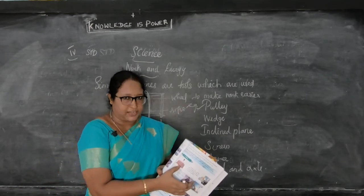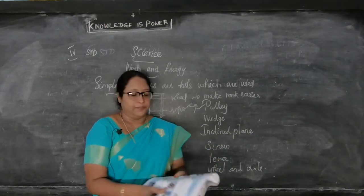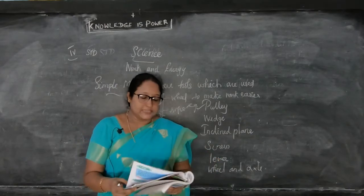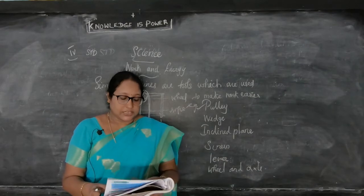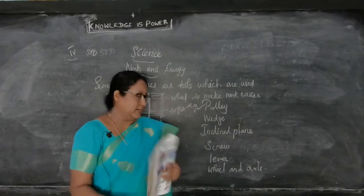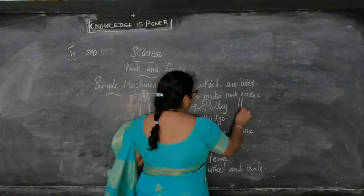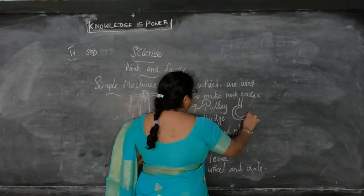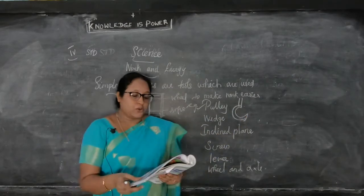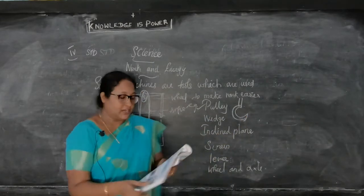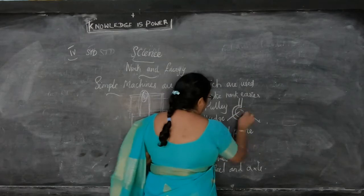A pulley is a machine made up of a wheel with a groove around it. A rope or chain passes around the pulley.